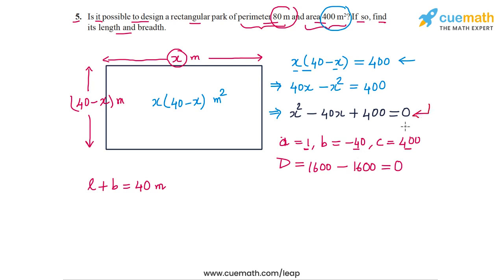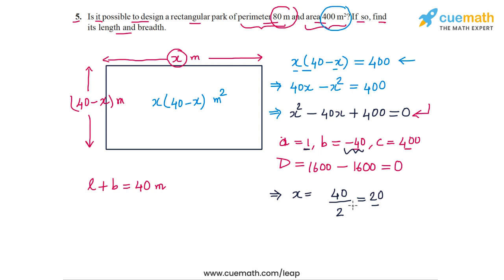The discriminant is 0. Because the discriminant is 0 and not negative, this equation will have real but identical roots. The roots are x equals minus b plus or minus root D, all divided by 2a. That's plus 40 plus or minus 0, divided by 2 times 1, which equals 20. Both roots are identical and equal to 20.